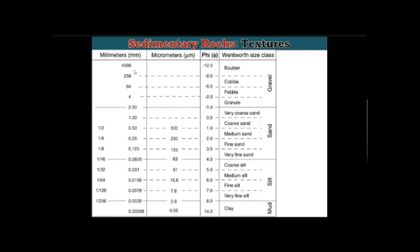Greater than 256 mm is a boulder, then cobble, then pebble, then granule. Very coarse, coarse, medium, fine, and very fine sand categories exist. A phi scale is also used for grain size classification. Silt can also be classified, and clay — mark — has a diameter less than 1/256 mm.